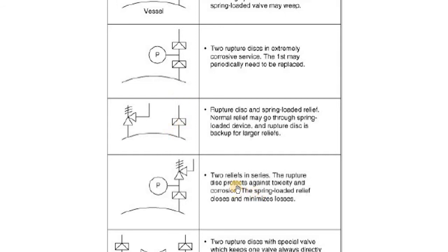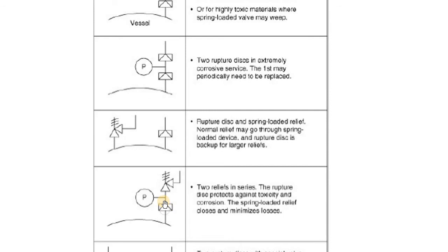Two reliefs in series: the rupture disc protects against toxicity and corrosion, while the spring-loaded relief closes afterward to minimize losses. If you don't have the rupture disc, the corrosive material will corrode the spring mechanism and piston, which is very expensive. With the rupture disc in place, the spring-loaded valve is only in contact with corrosive material for a few seconds or minutes when it opens, rather than being continuously exposed. Then we replace the rupture disc.